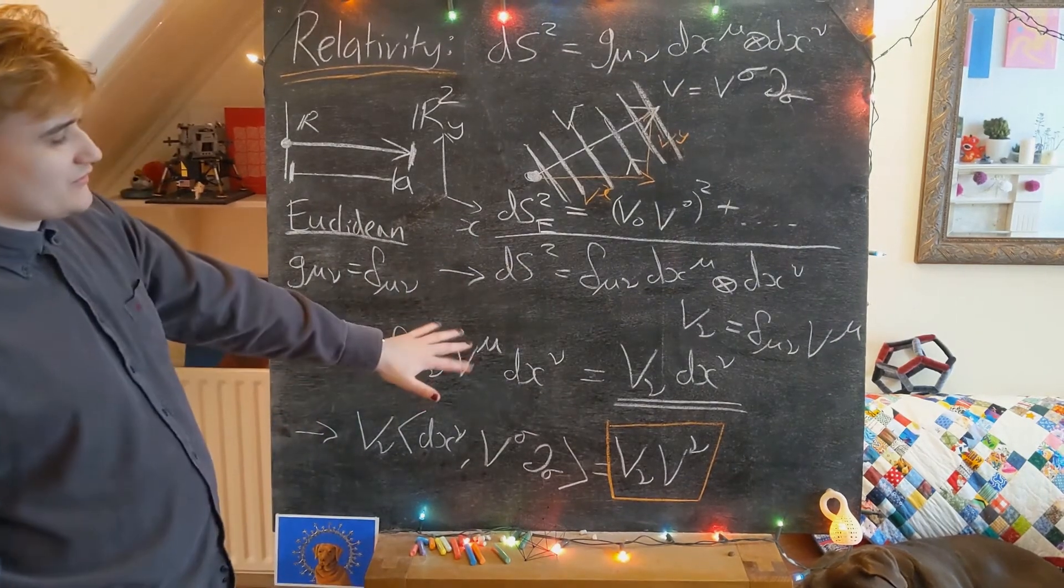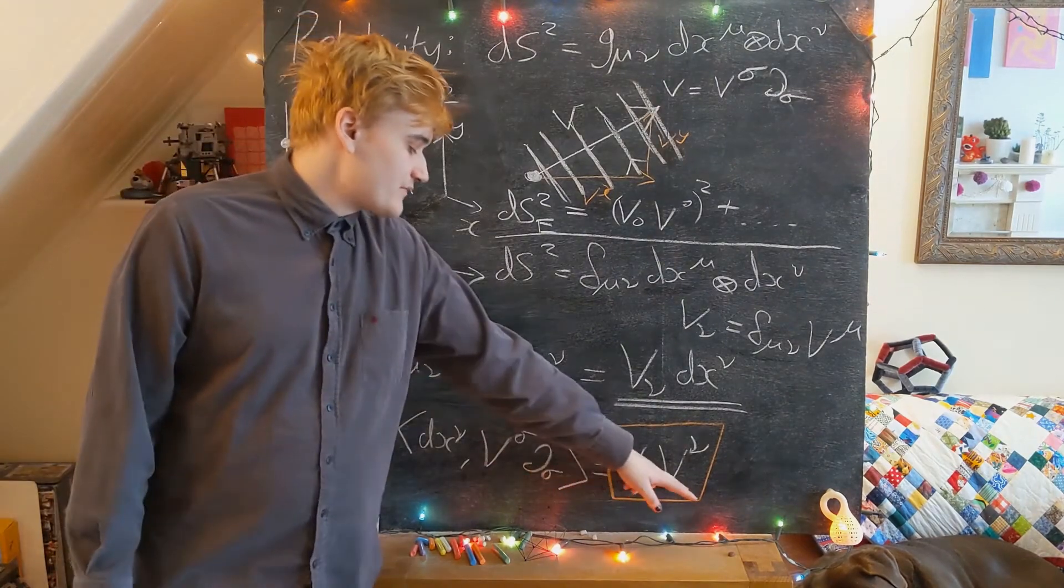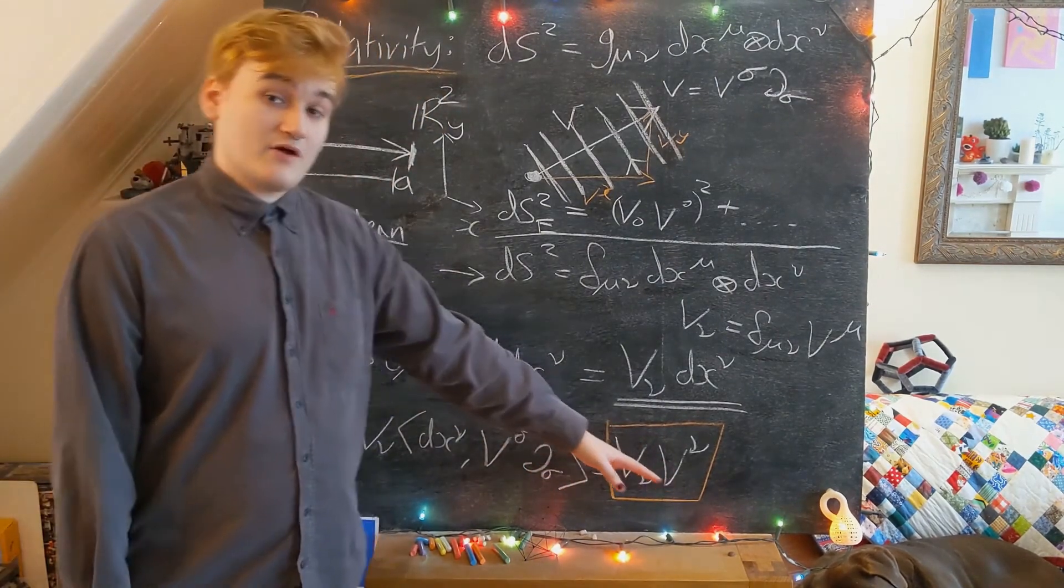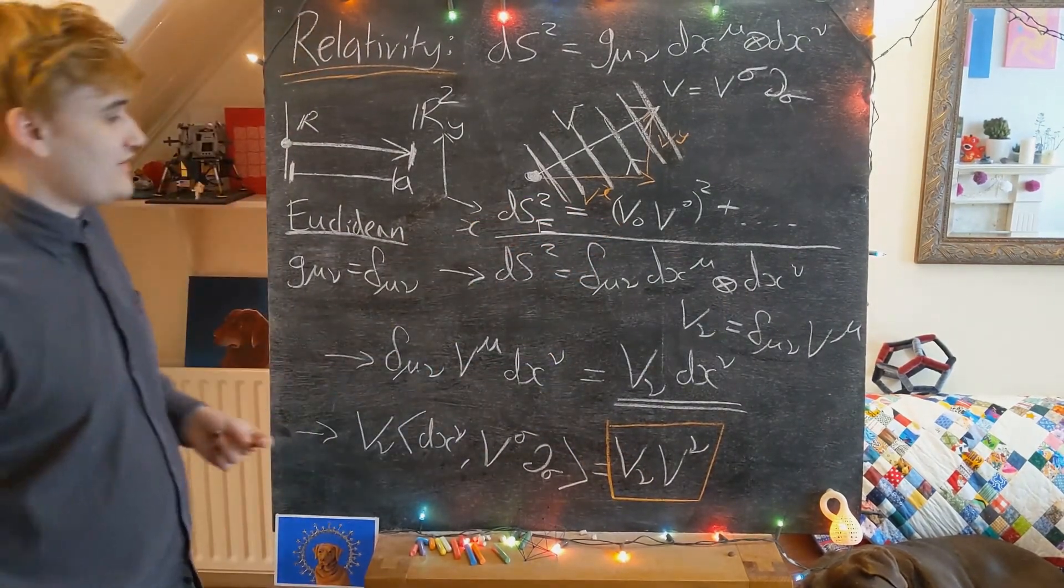And we saw in the simple Euclidean case how essentially we just arrive at a simple expression, which is just squaring and summing the components, which we realize is essentially just Pythagoras' theorem.